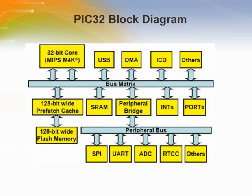The bus matrix runs at the same speed as the CPU, while the peripheral bus can be programmed to run at a different clock setting than the CPU. The exact bus clock is determined by the peripheral bridge setting.